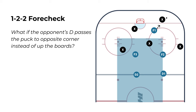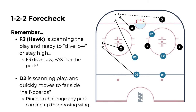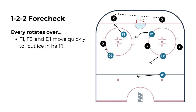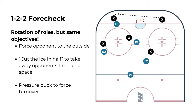But what if the opponent tries an overboard breakout and passes it from one corner to the other corner, despite F1's efforts to force the play up the boards? In this situation, our Hawk, F3, reads that pass to the weak side and dives down low, quickly attacking on the puck. Meanwhile, D2 reads that play and anticipates the puck going to the corner and coming up the opposite half boards, and they aggressively pinch over to cover any puck coming up those boards. Our other three players rotate over to cut the ice in half, and while our players' roles have all rotated or changed, the structure and the objectives of our forecheck have stayed the same.